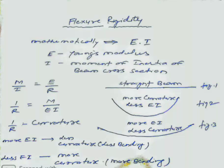Mathematically, this term is defined as the multiplication of E and I, where E is Young's modulus and I is the moment of inertia of the beam cross-section.